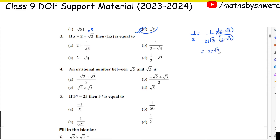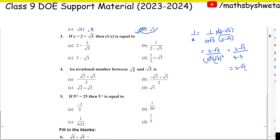We multiply by (2 − √3) using the identity (a + b)(a − b) = a² − b². So we get 2 − √3 in the numerator and (4 − 3) = 1 in the denominator. Therefore 1 upon x equals 2 − √3. That is the answer.